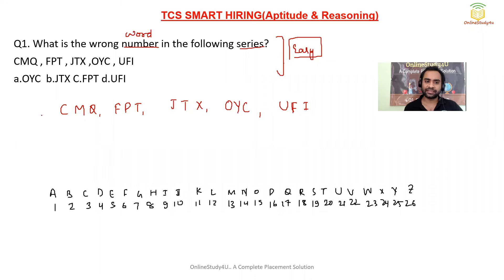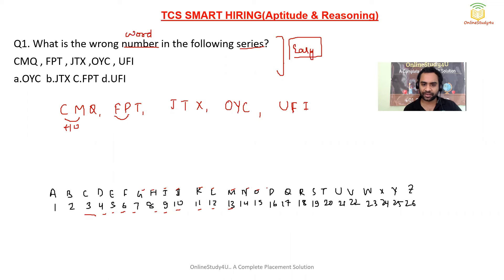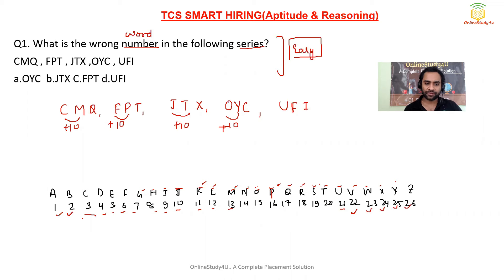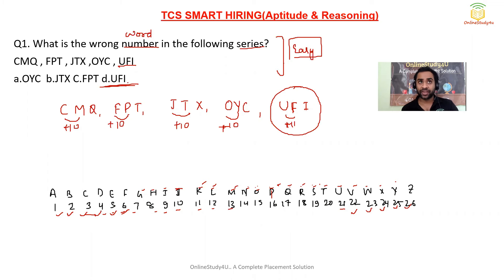To solve this, we check the difference between the first and second letters of each group. C to M: difference is 10. F to P: difference is 10. J to T: difference is 10. Then U to F: counting the difference gives 11. So the difference is not 10 here — we've found the culprit. The wrong word in the series is UFI.